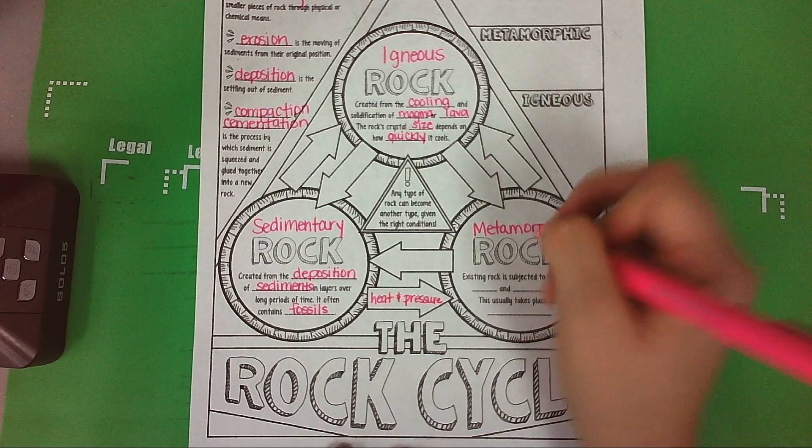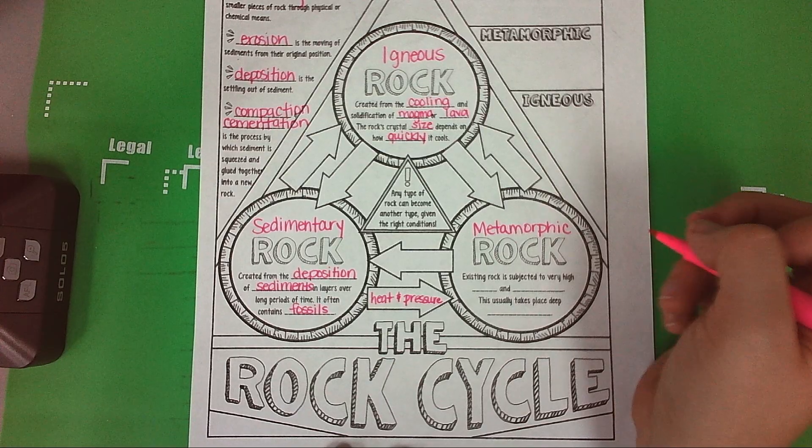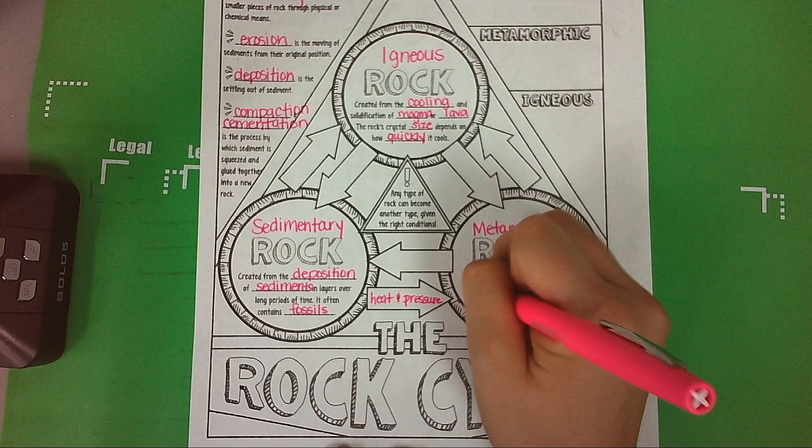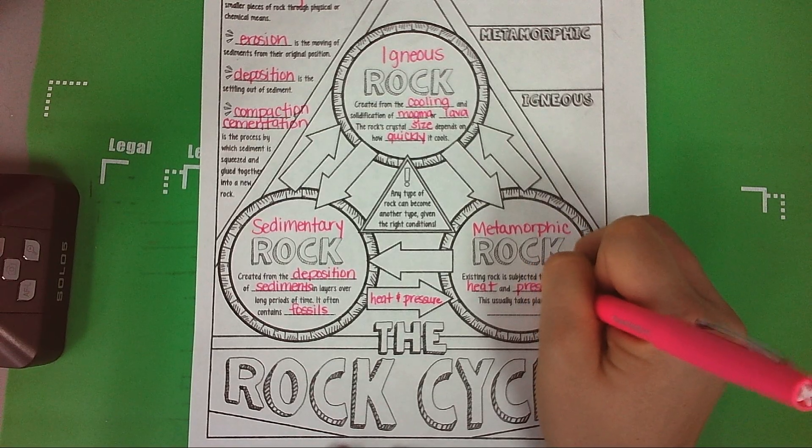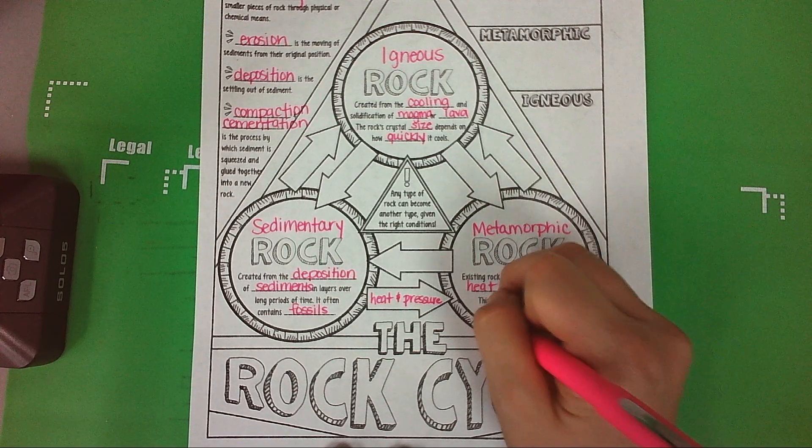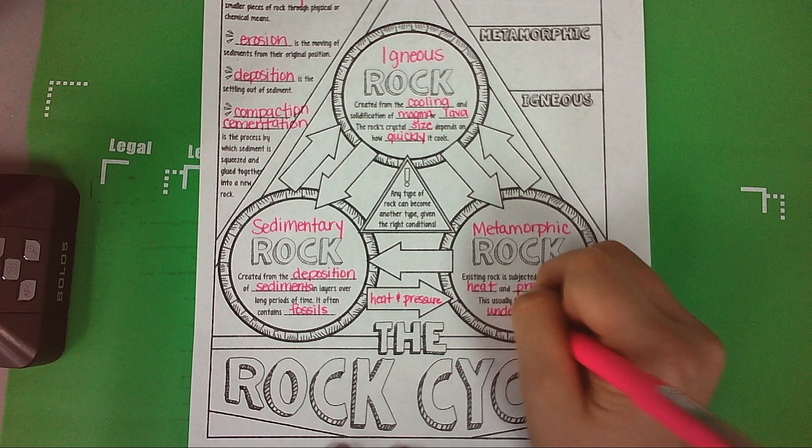If you apply heat and pressure, you can get metamorphic rock. Existing rock is subjected to very high heat and pressure. This usually takes place deep underground, so within Earth's layers.